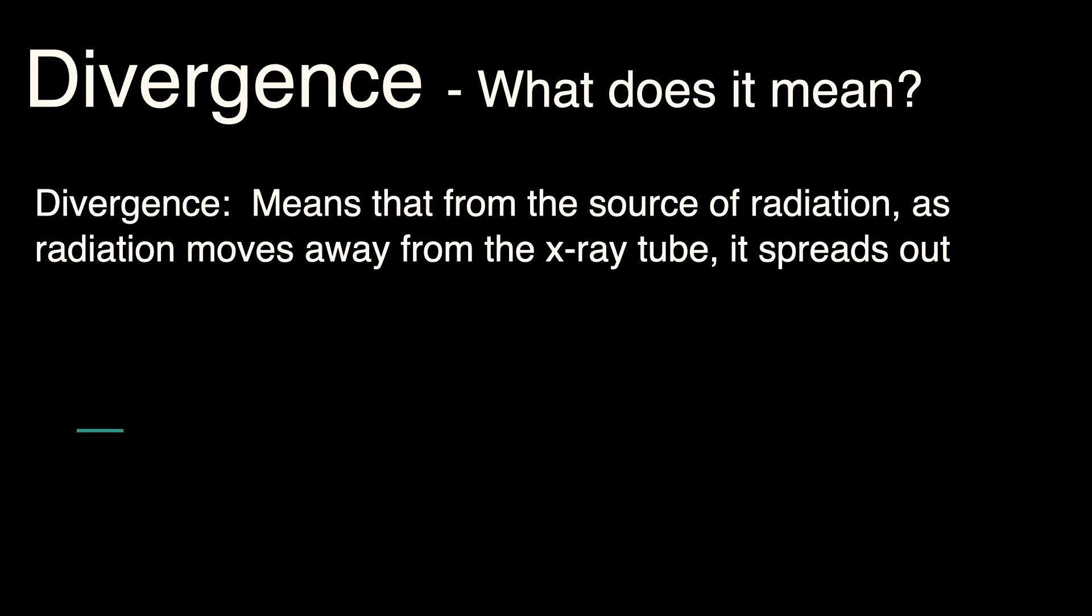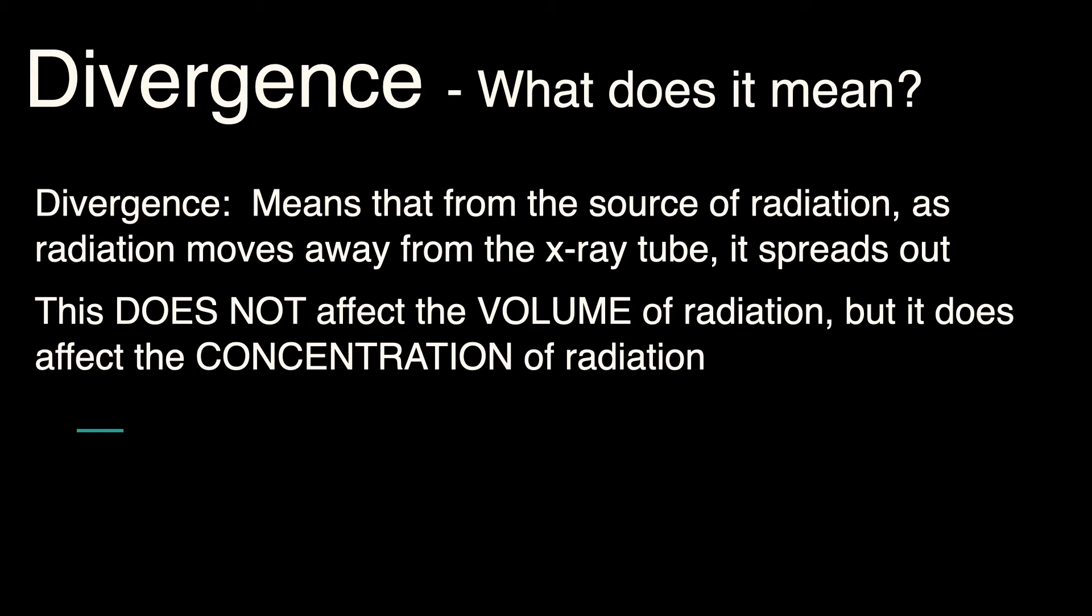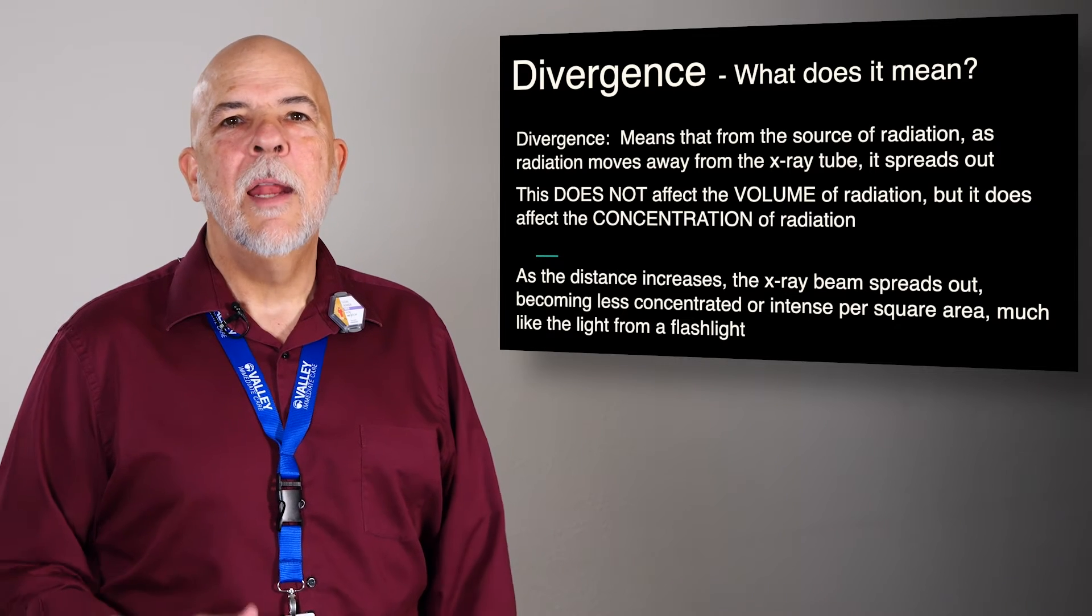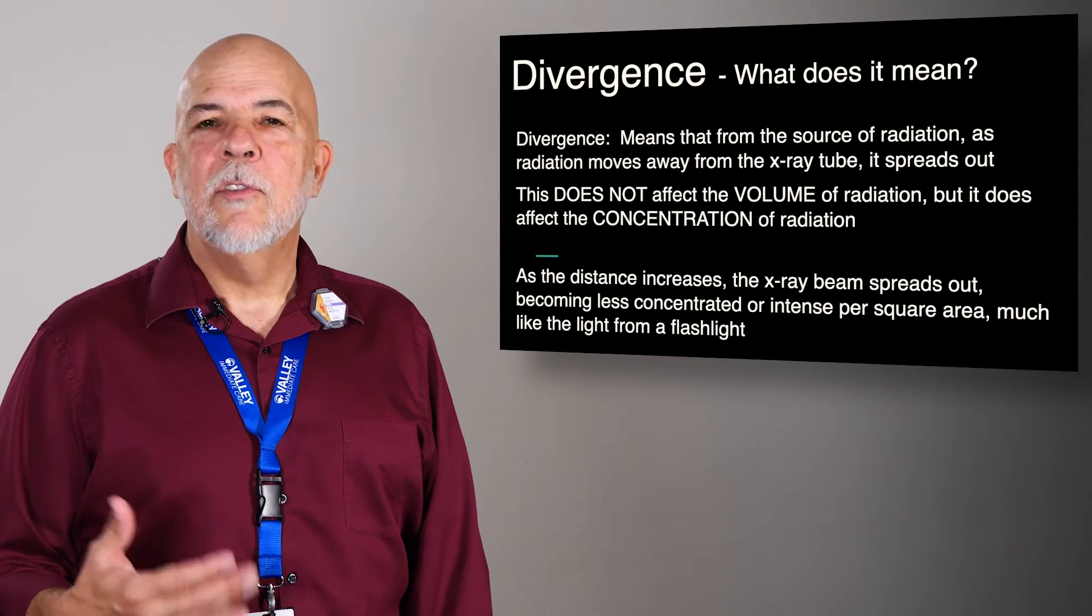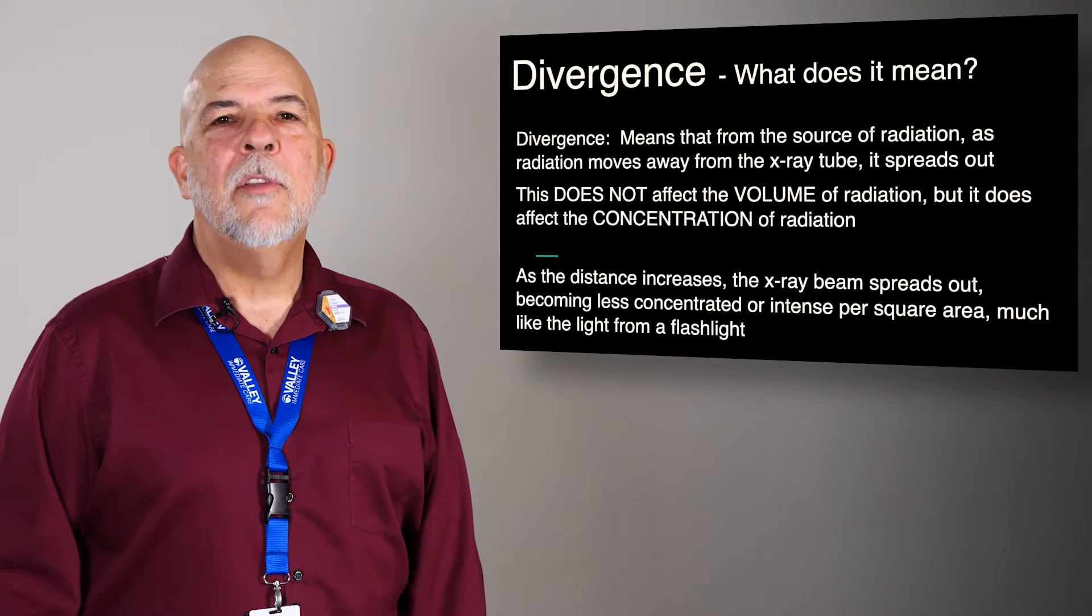Divergence is from the source of the radiation moving out. The beam diverges, or spreads out as it moves further. This does not affect the volume of radiation, but it does affect the concentration of radiation. Kind of like a flashlight. As you move further back, you can see less. It's not because there's less light, it's just less concentrated.